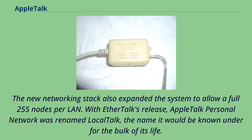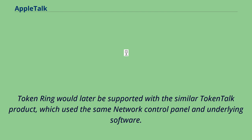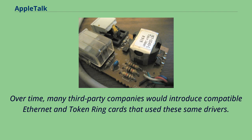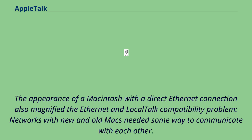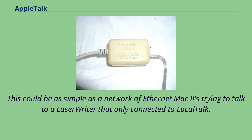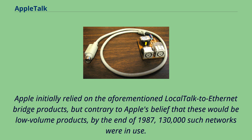Token Ring would later be supported with a similar TokenTalk product. Over time, many third-party companies would introduce compatible Ethernet and Token Ring cards using these same drivers. The appearance of a Mac with direct Ethernet also magnified the Ethernet and LocalTalk compatibility problem. Contrary to Apple's belief that LocalTalk-to-Ethernet bridges would be low-volume products, by the end of 1987, 130,000 such networks were in use. AppleTalk was at that time the most-used networking system in the world, with over three times the installations of any other vendor.